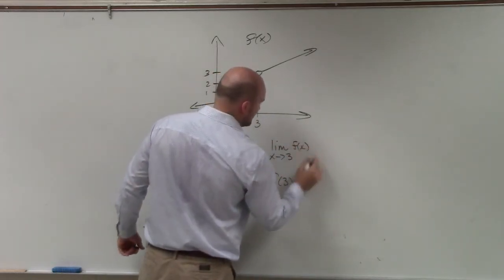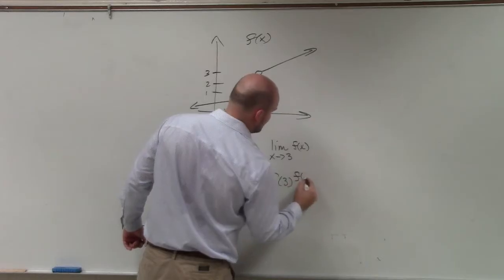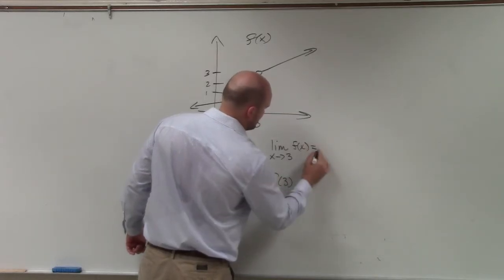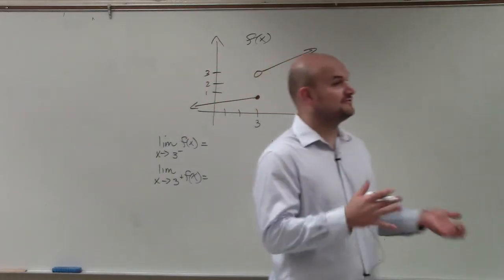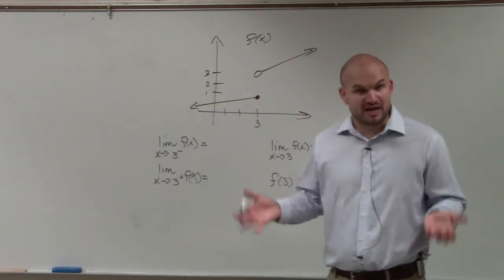Doesn't really make sense to take a limit if we don't know what that limit is of, that's f of x. So you're taking the limit as x approaches 3 from the left or from the right or of 3 of the function f of x.